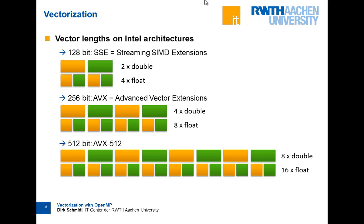There are different vector lengths available. SSE instructions, which most will have heard of, have 128-bit registers — they can load two double elements or four float elements in one register, giving a speedup of two for doubles. With later processors like Intel Sandy Bridge and Ivy Bridge, the vector length was doubled to 256-bit registers, so you can load four doubles or eight floats and compute four or eight operations in one step.